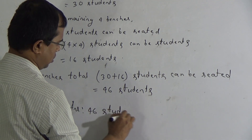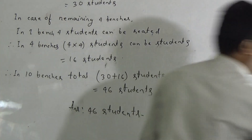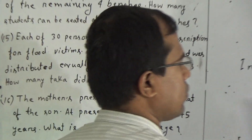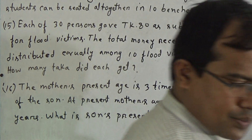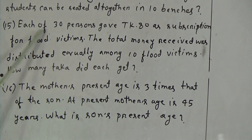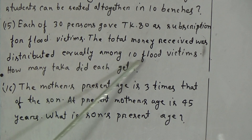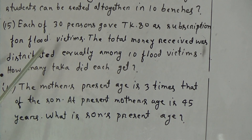Okay, dear students, we have solved problem 11. Now we will solve problem 15. The question is: each of 30 persons gave TK 80 as a subscription for flood victims. The total money received was distributed equally among 10 flood victims. How many takas did each get? Total 30 persons, and each person's subscription is TK 80, so 30 persons' subscription will be 30 multiplication 80.